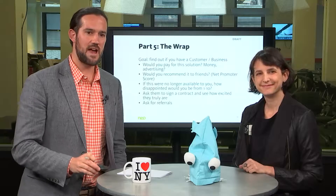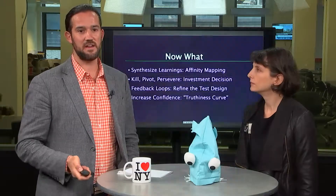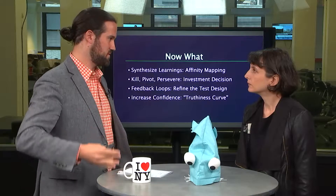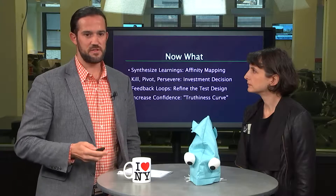The final part is called the rack — this is where you find out if you have a customer or might want to build a business. You ask: would you pay for this with money or your data? Would you recommend this to friends? And if this were taken away from you — even though it's hypothetical — how disappointed would you be from 1 to 10? For net promoter score, if you don't have a 9 or 10, it's really hard to build a business around. Most importantly, ask for referrals to other people you might want to interview, because recruiting and scheduling is a pain.